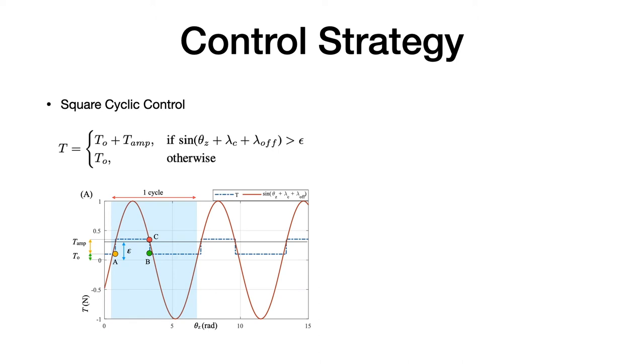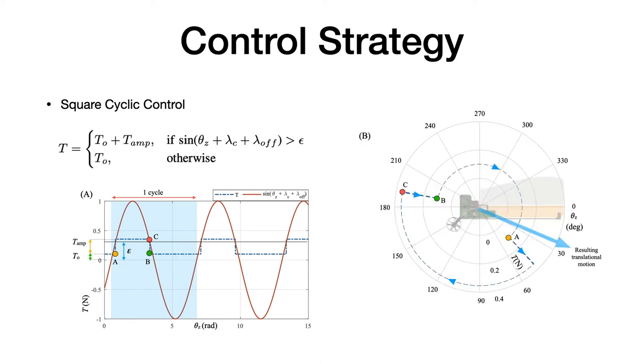The motor control signal is given by a square cyclic controller. Basically, it switches to a higher or lower thrust depending on the heading angle as the platform rotates. T is the thrust control signal. T0 is the offset thrust value. And Tamp is the amplitude of the increase in thrust.